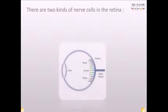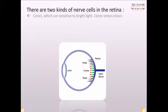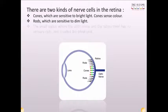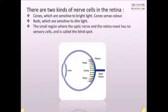There are two kinds of nerve cells in the retina. Cones, which are sensitive to bright light and sense color. Rods, which are sensitive to dim light. The small region where the optic nerve and the retina meet has no sensory cells and is called the blind spot.